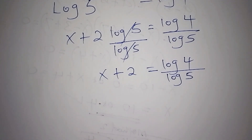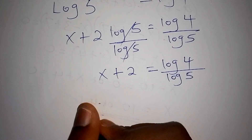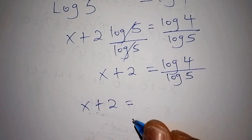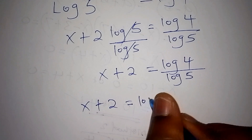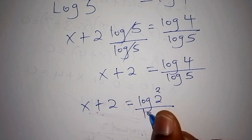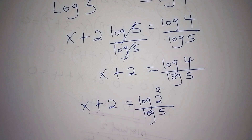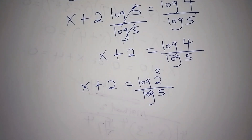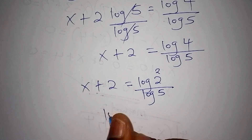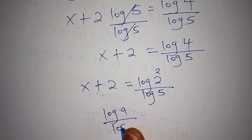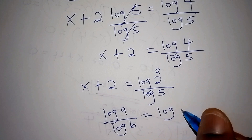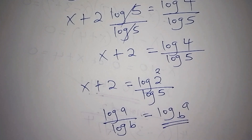Let us proceed — we are just about to finish. We have x plus 2 is equals to log of 4, which can also be written as log of 2 to the power of 2, all over log of 5. We know that log of a all over log of b gives us log of a to the base b.